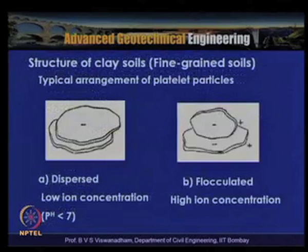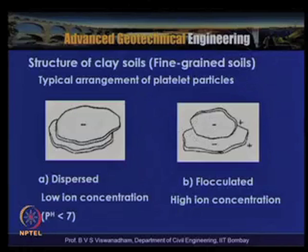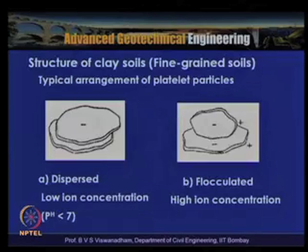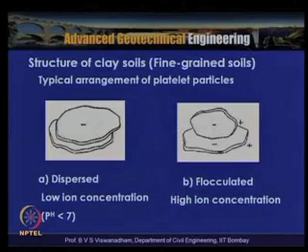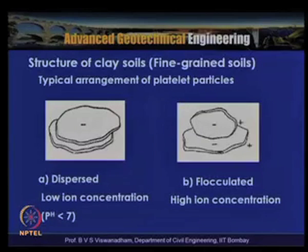A typical arrangement of platy particles is shown. With low ion concentration when pH is less than 7 there is a possibility of a dispersed structure; with high ion concentration, because of edge-to-face attraction and net attractive forces between particles, there is a possibility of a flocculated structure.